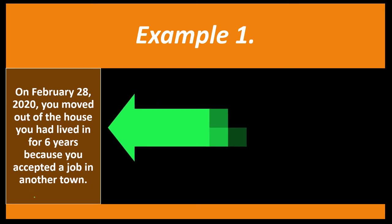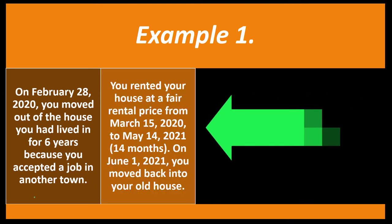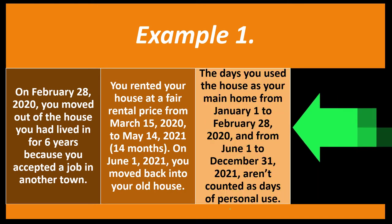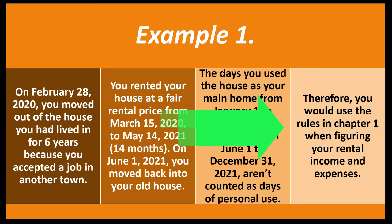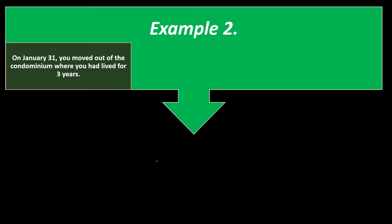Example one: On February 28th, 2020, you moved out of a house you had lived in for six years after accepting a job in another town. You rented it at a fair rental price from March 15th, 2020 to May 14th, 2021 — that's 14 months. On June 1st, 2021, you moved back in. The days you used the house as your main home from January 1st to February 28th, 2020, and from June 1st to December 31st, 2021, aren't counted as days of personal use. You would use the rules in chapter 1 when figuring rental income and expenses since you exceeded 12 consecutive months.